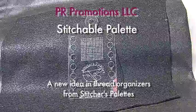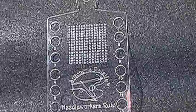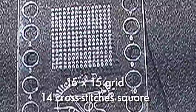This is a traditional hornbook shape with a 15 by 15 grid, which equates to 14 cross stitches. You can cross stitch any design you wish into this grid and customize the palette to your own needs.